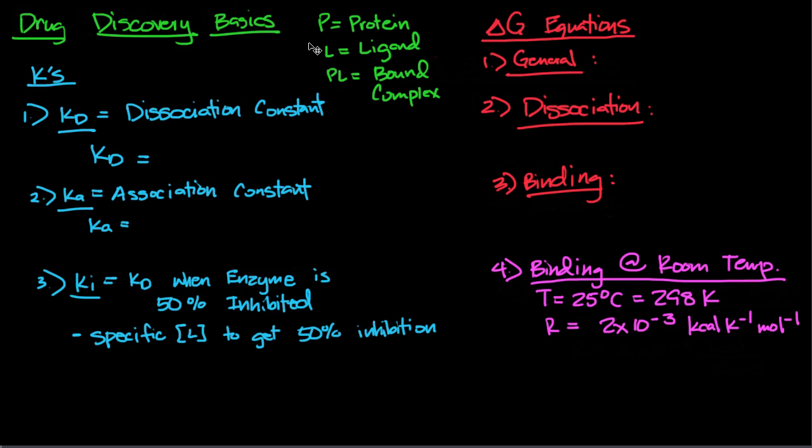Now let's go over some K's: Kd, Ka, and Ki. First, Kd is the dissociation constant, a measure of how much the protein-ligand complex is going to dissociate. Kd equals products over reactants, so Kd = [P][L] divided by [PL] complex.